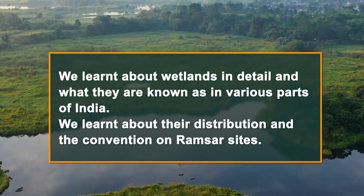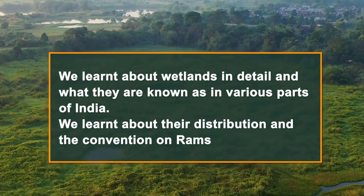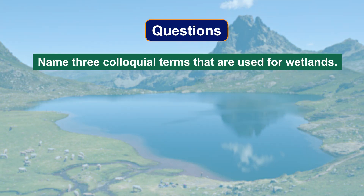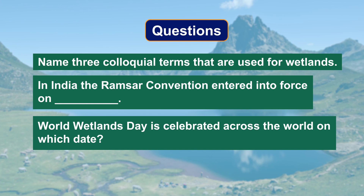Dear learners, we learnt lots of things about wetlands today. We learnt about wetlands in detail and what they are known as in various parts of India, their distribution, and the convention on Ramsar sites. Now let us try to solve a few questions: Name three colloquial terms used for wetlands. In India, the Ramsar Convention entered into force on which date? And on which date is World Wetlands Day celebrated across the world? Try finding out the names by which wetlands are known in your locality.